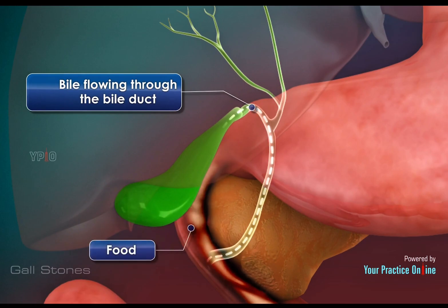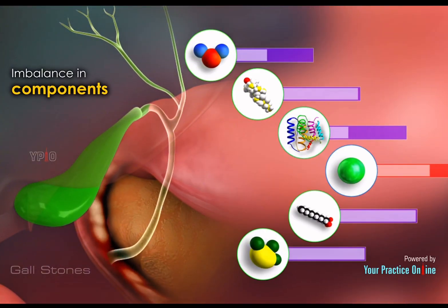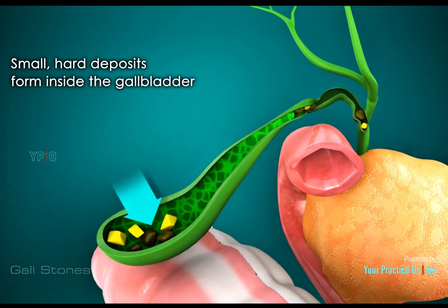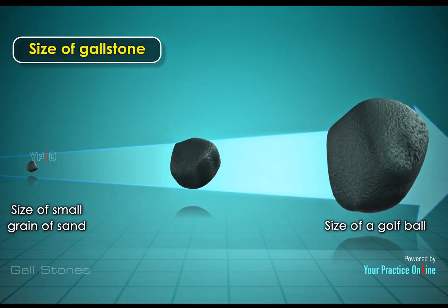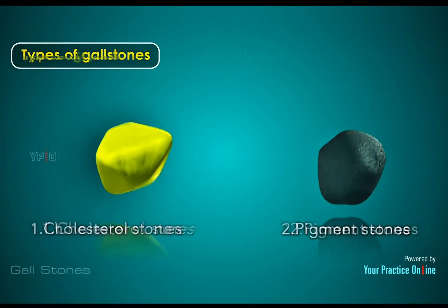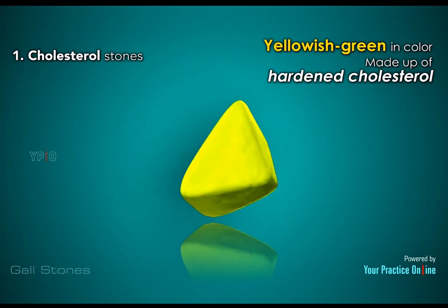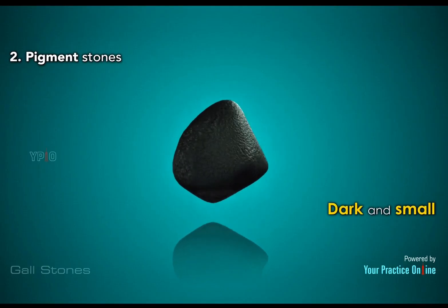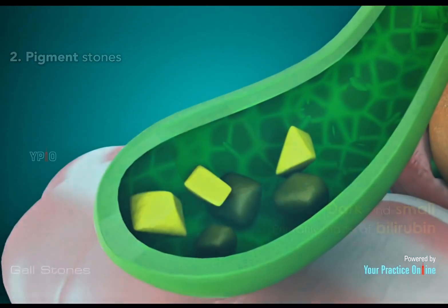An imbalance in the components that form bile can lead to the formation of gallstones. Gallstones are small, hard deposits that form inside the gallbladder. The size of a gallstone can range from a small grain of sand to a large golf ball. Gallstones are of two types: cholesterol stones, which are yellowish or green in color and chiefly made up of hardened cholesterol; and pigment stones, which are dark and small, usually present in numbers and primarily made of bilirubin, a yellowish bile pigment. In some cases, a mix of both gallstone types can be seen.